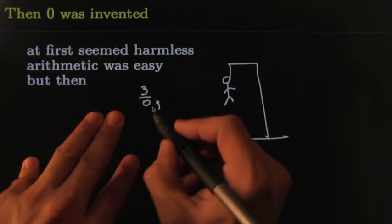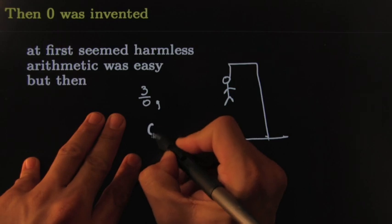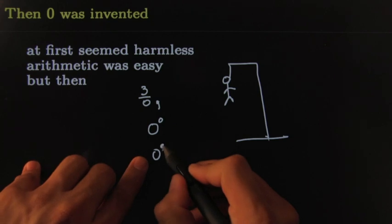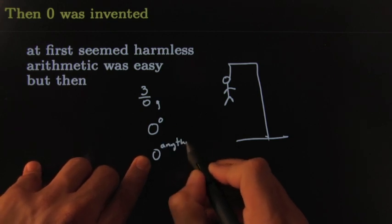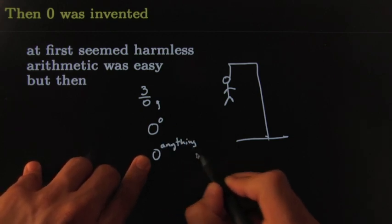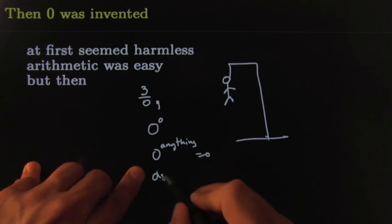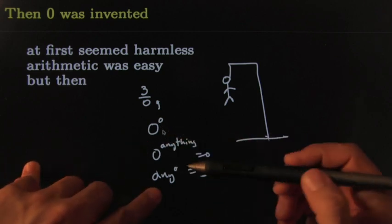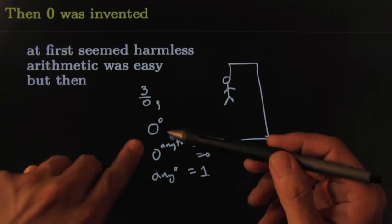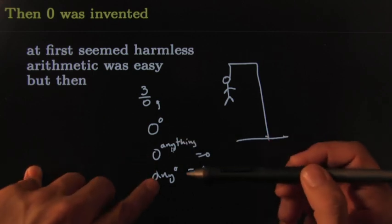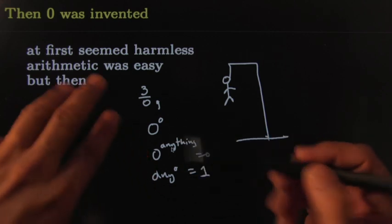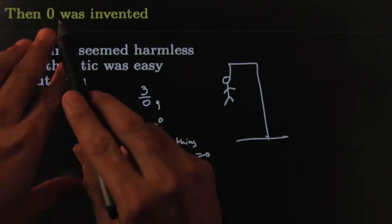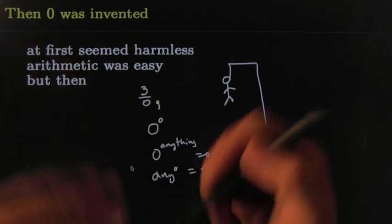There was also something like zero raised to the zero. First they would tell you: zero to the anything would be equal to zero. But anything to the zero would be equal to one. Then you have something like 0^0 where both of these statements seem to be conflicting, and so it brought a lot of trouble.